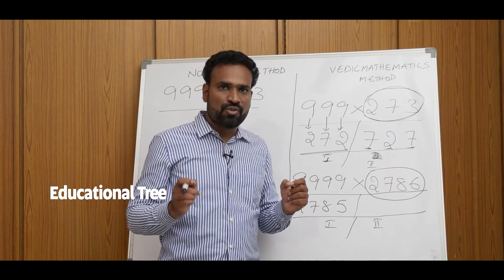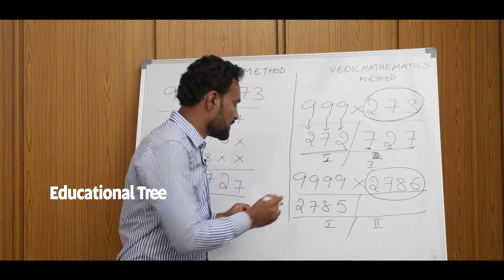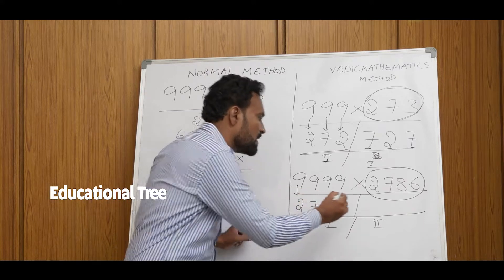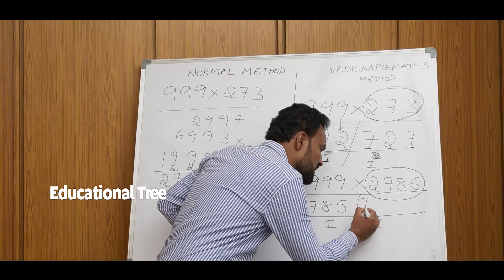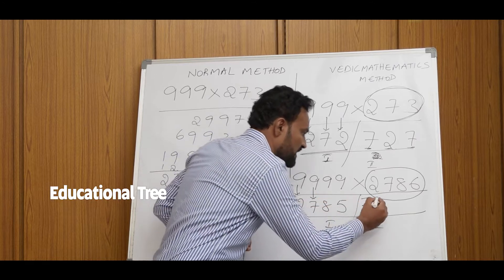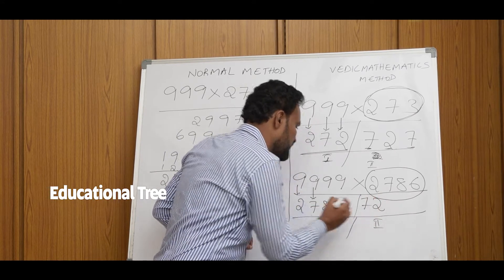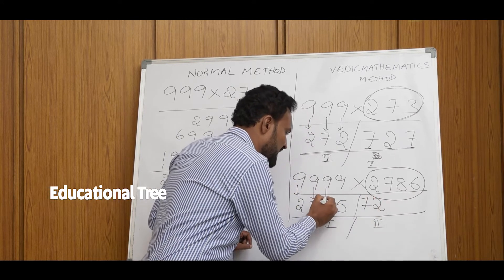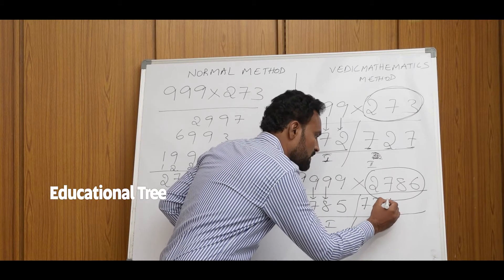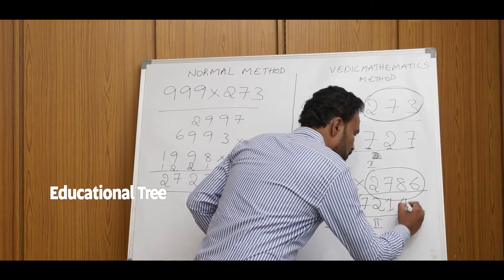For each and every digit in the first part, subtract from 9. What is 9 minus 2? It is 7. Next, what is 9 minus 7? It is 2. And what is 9 minus 8? It is 1. And what is 9 minus 5? It is 4.